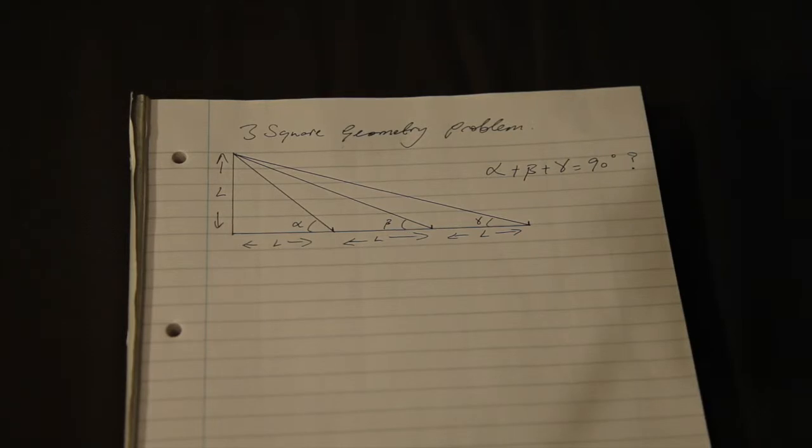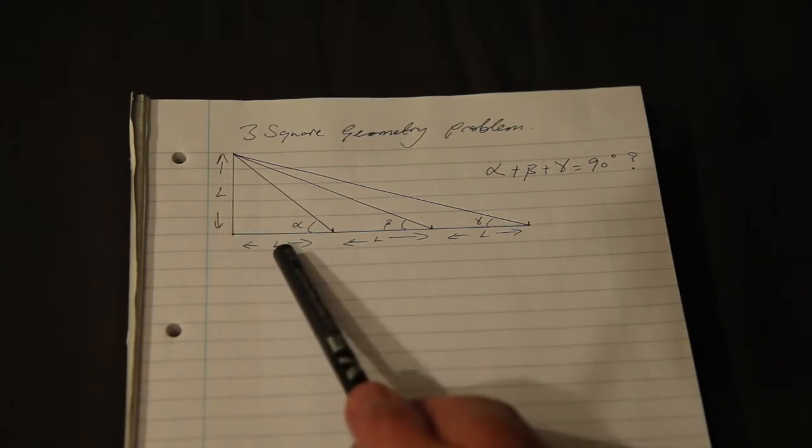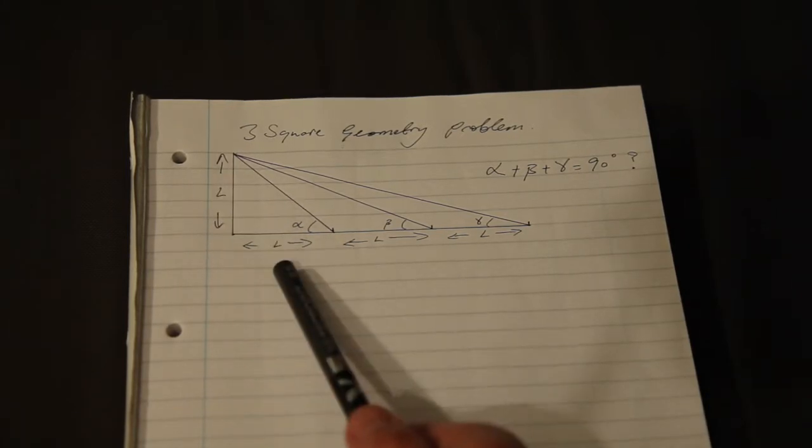So the problem is that we've got these three angles, alpha, beta, and gamma, and they're set up in such a way that they're right-angled triangles, and the opposite side to the adjacent side for alpha is a one-to-one ratio.